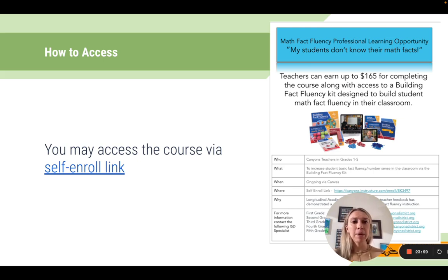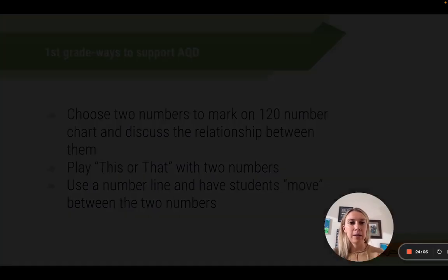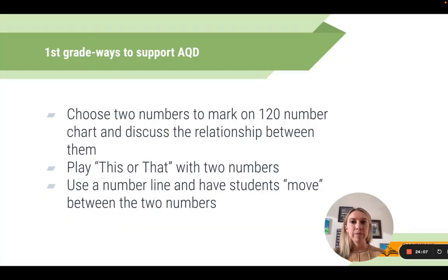Your coach has the self-enroll link housed on the Canvas course. You sign up and can earn up to $165 in various stipends and also earn a USBE credit.